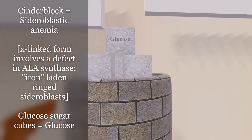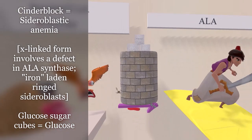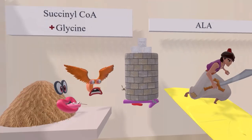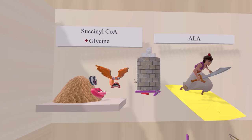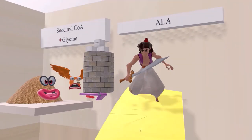Inside the cinder block structure are glucose sugar cubes. Glucose was also involved in stopping synthase, reminding us that glucose also inhibits this step of heme synthesis. With that, we're ready to move on to the next step.